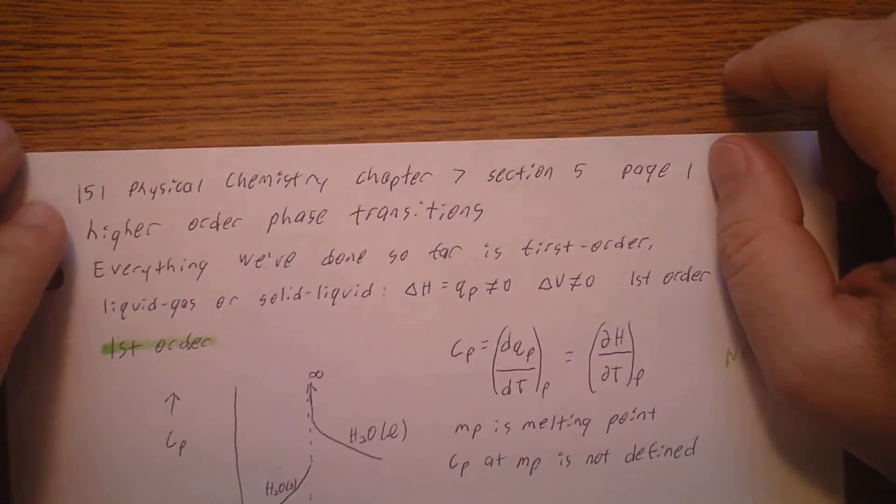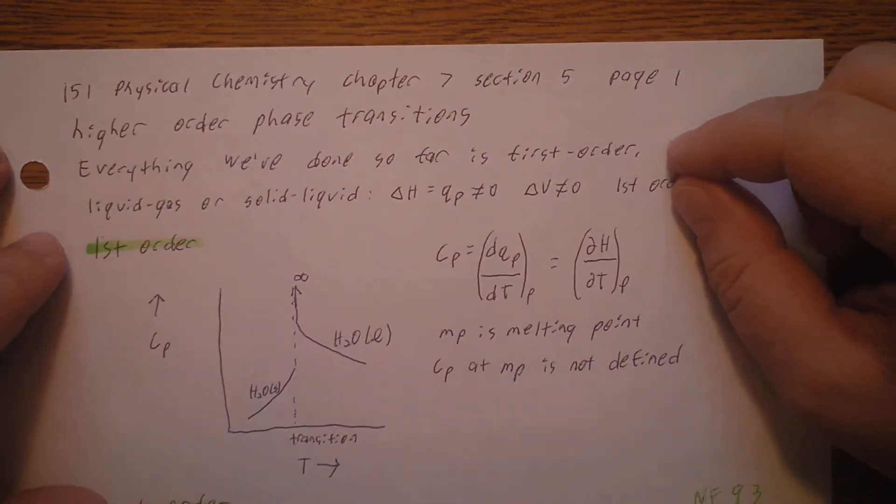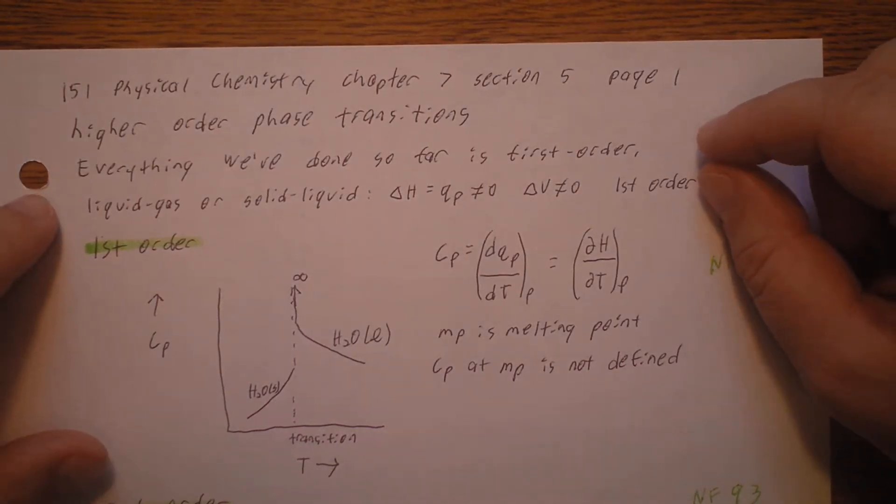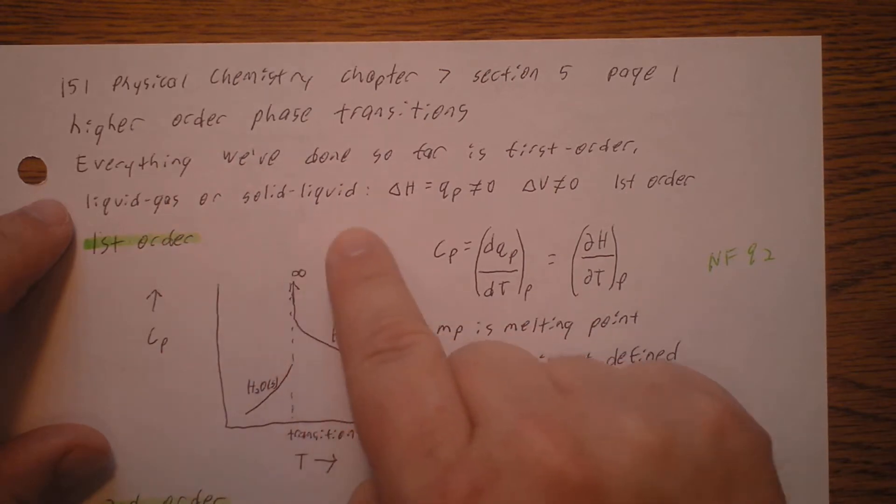That's the end of section four. Now we're in chapter seven, section five. Let's talk about higher order transitions. So far, all the transitions we've talked about are first order transitions.